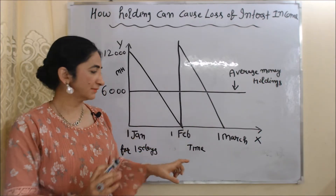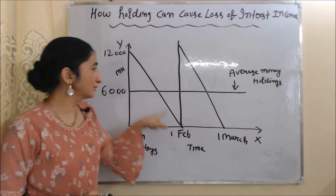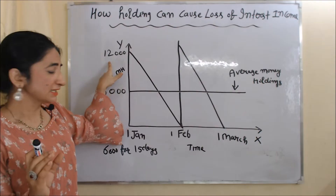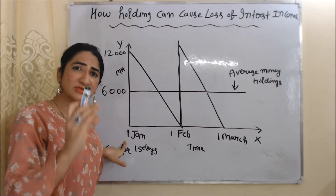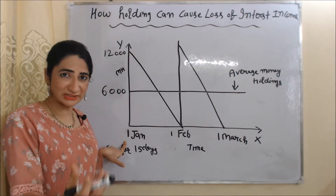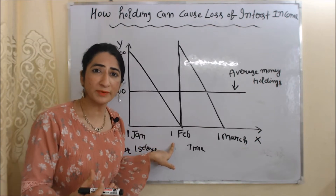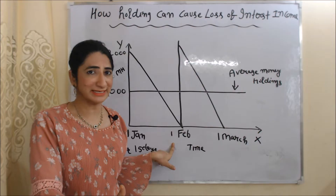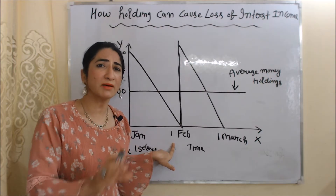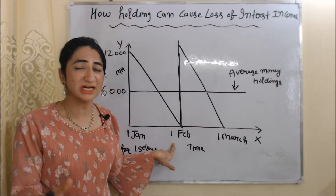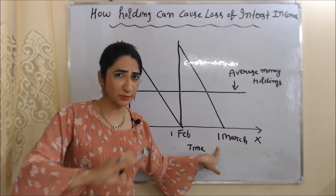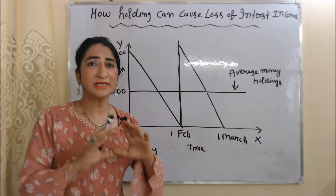In this diagram, on the x-axis we have time and on the y-axis we have money holding. Suppose your monthly salary is 12,000 rupees. On the 1st of January, you receive 12,000 rupees in your account, you withdraw the whole amount for your monthly transactions, and you spend this 12,000 rupees till the 1st of February. On the 1st of February, you receive 12,000 rupees again, withdraw the whole amount, and spend it till the 1st of March. This process continues.